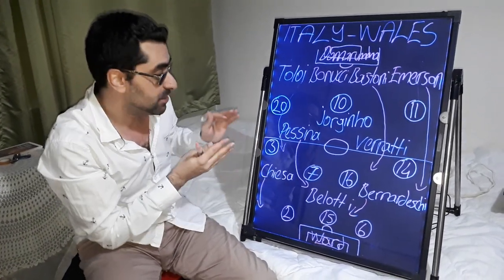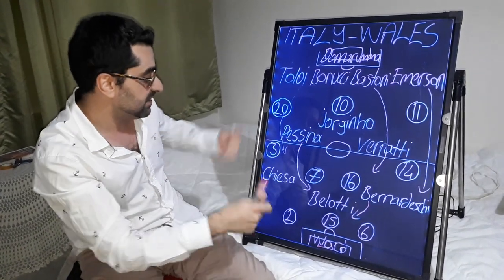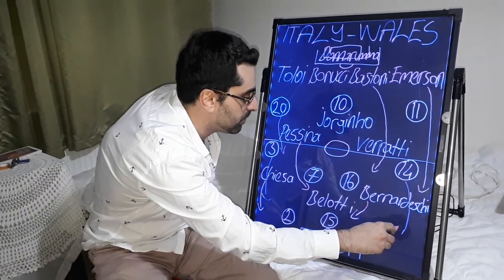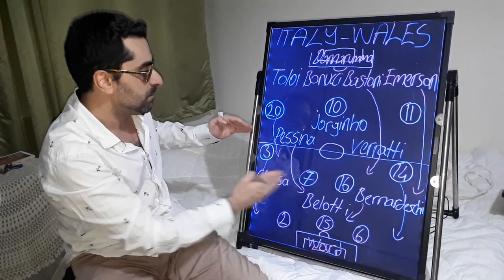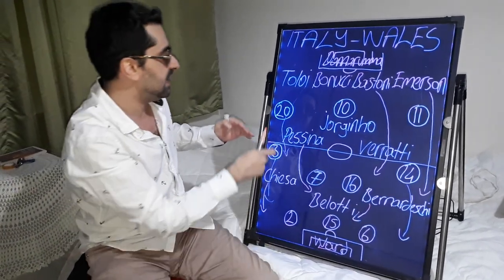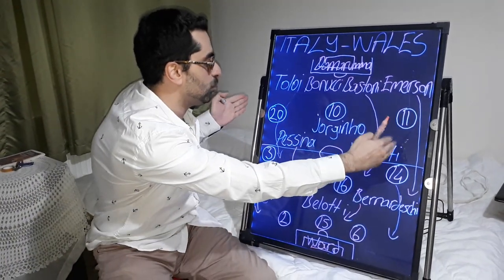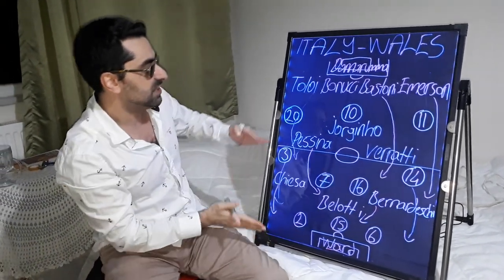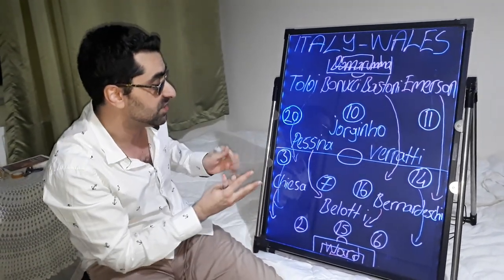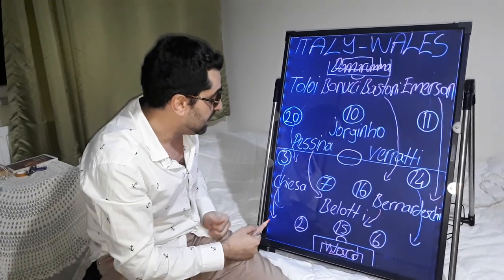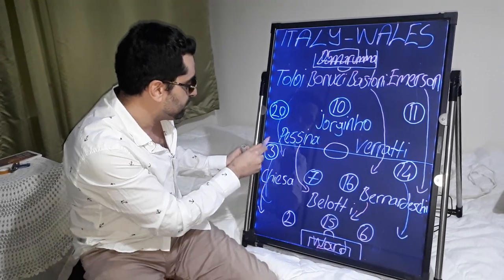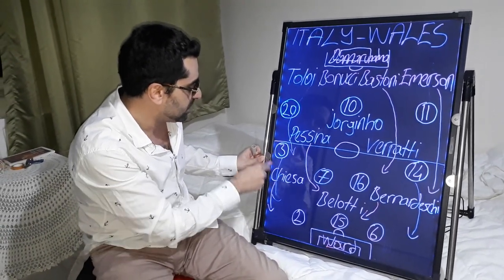Wales played more defensively. During Italy's attacks, Wales' wing-backs and wide midfielders dropped back, forming a defensive line of five. James and Bale came back to the wings of midfield, and Wales closed the empty spaces on their own half. Chiesa played one-on-one versus Williams and forced him so much.